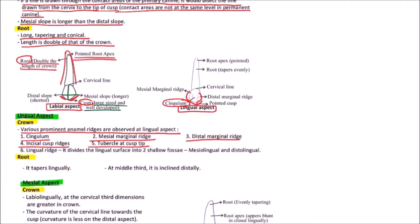The cusp tip is pointed and has a tubercle, and the lingual ridge. It divides the lingual surface into two shallow fossae: mesial lingual and distal lingual.